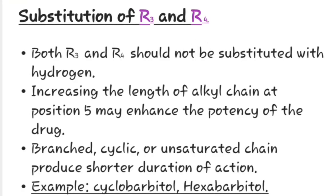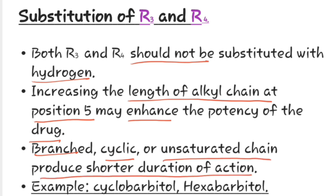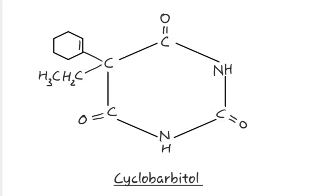Now let us study about substitution of R3 and R4. Both R3 and R4 should not be substituted with hydrogen. Increasing the length of the alkyl chain at position 5 may enhance the potency of the drug. Branched, cyclic, or unsaturated chains produce a shorter duration of action. Examples are cyclobarbital and hexabarbital. This is the structure of cyclobarbital, which does not contain hydrogen at the 5th position but instead contains an alkyl chain and a cyclic compound.